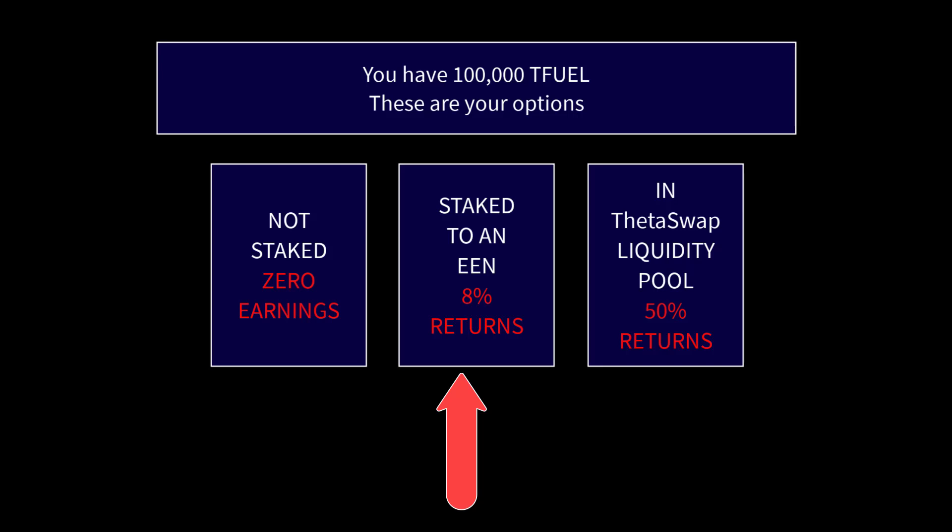Staking to an elite edge node, you're going to earn about eight percent a year on your T-Fuel. The downside is that if the price spikes and you decide you want to sell, it takes three days to unstake your T-Fuel so that you can sell it — and there's no telling what the price is going to do during those three days while you're waiting.